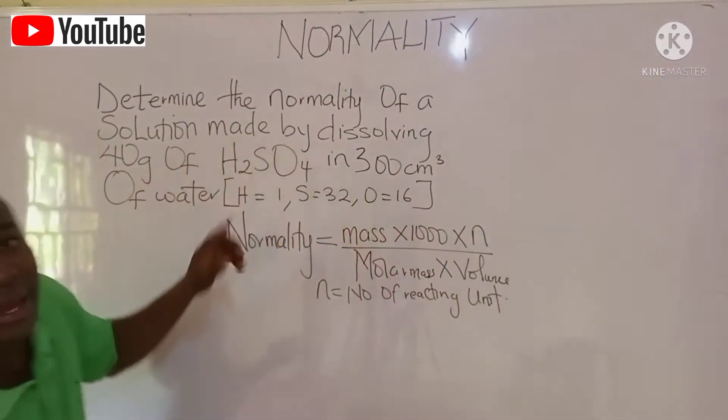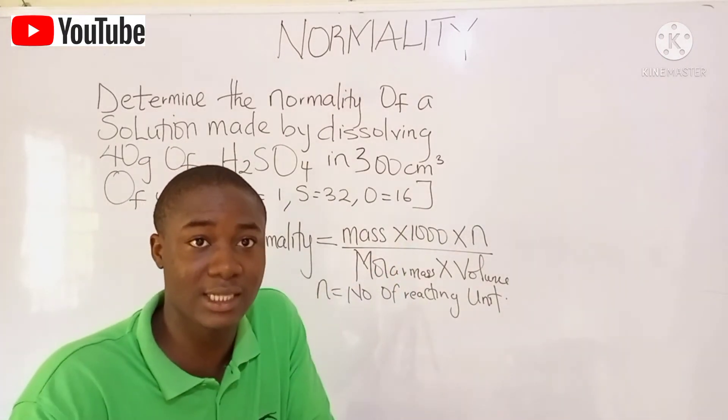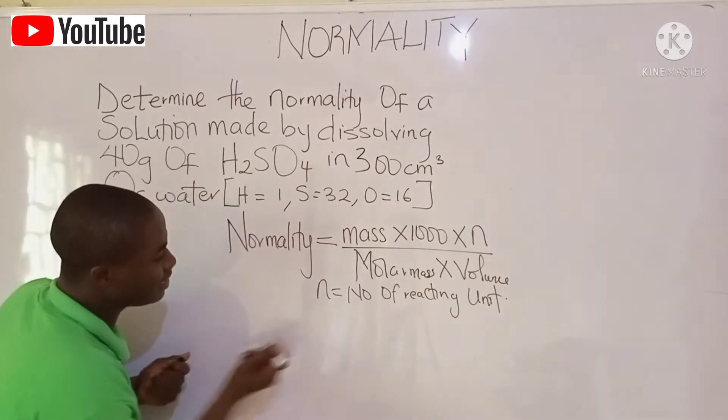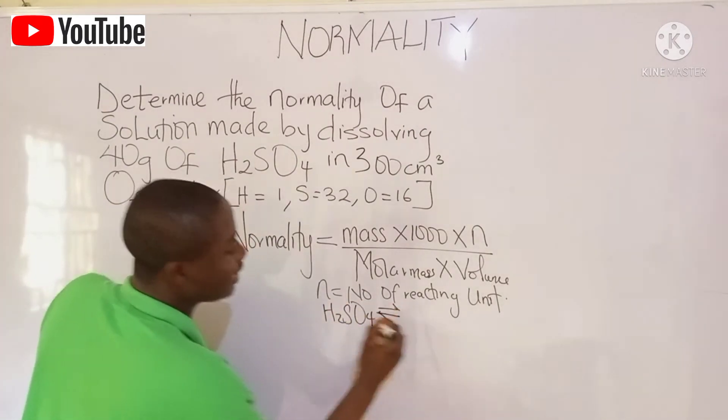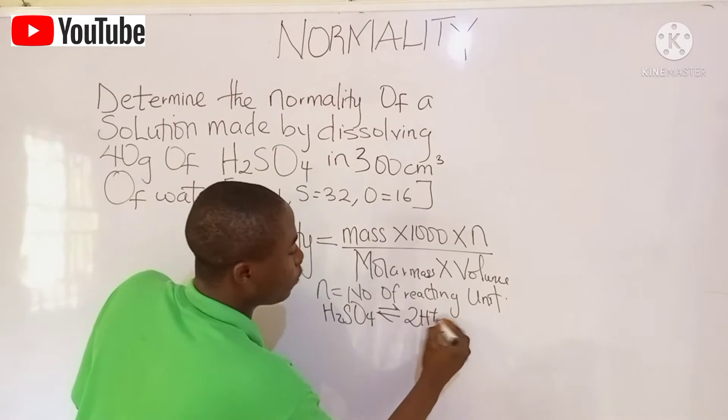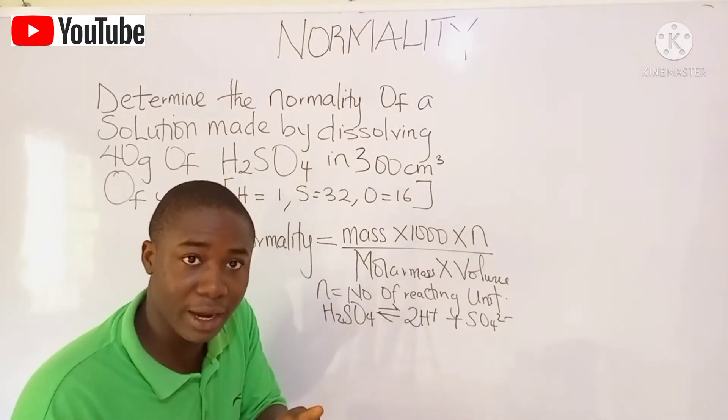Now, you can see the compound here is an acid. So the number of reacting units will be the basicity of that acid. And the acid is H2SO4. This is H2SO4. Dissociating H2SO4, we get 2H plus plus SO4 2 minus.